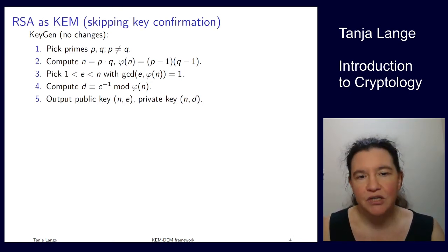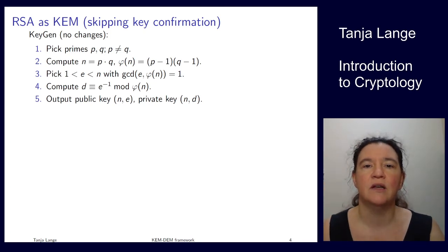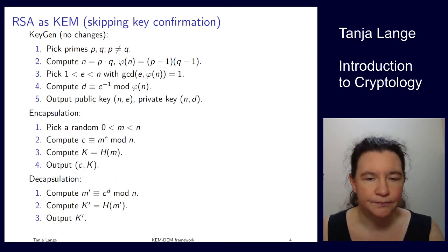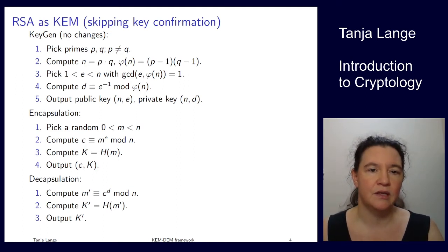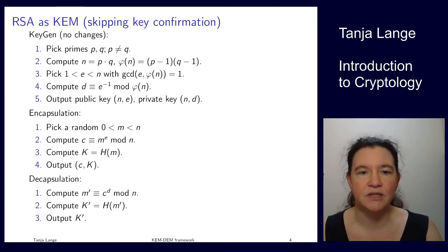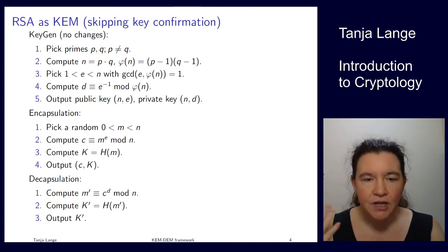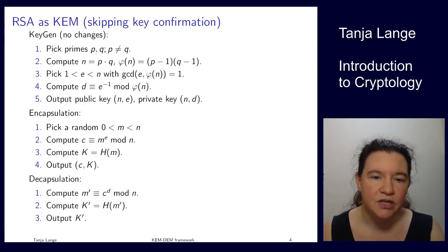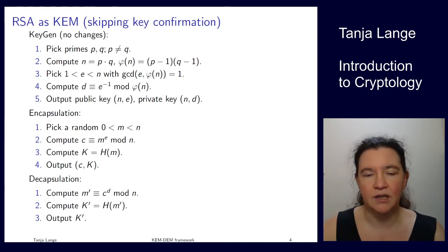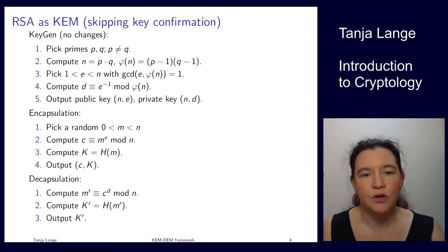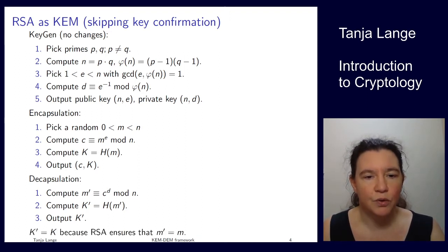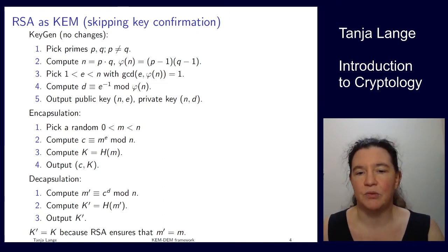For RSA as a KEM, there is no change to key generation. We only modify steps 2 and 3. The encapsulation picks a random message m, encrypts it to produce ciphertext m^e mod n, and also computes the key k as the hash of the message. The decapsulation uses the decryption function: ciphertext^d gives back the same message m', and then hashing that message gives key k'. The system is sound because RSA guarantees m' equals m, and therefore the hash k' equals k.